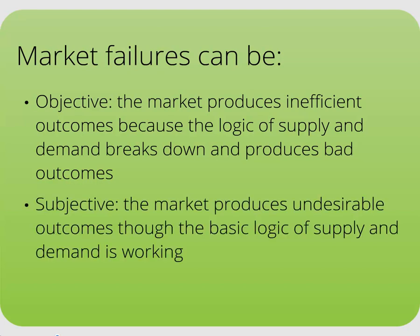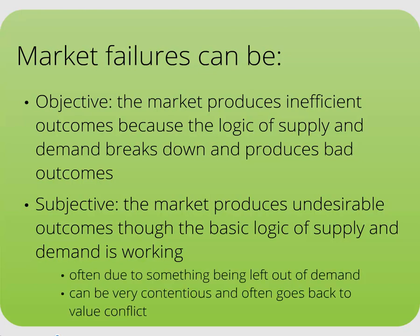A subjective market failure occurs when the basic supply and demand equation works but the outcome is somehow undesirable. These typically occur because something gets left out of demand. This is a tricky area because it is not uncommon that one group of people sees something as an undesirable outcome whereas another group sees it as completely acceptable. This gets back to our distinction between the necessary, beneficial, and politically generated roles of the state, and to the fact that people may often just have different values about who sees something as a market failure that needs to be fixed.